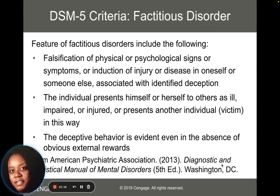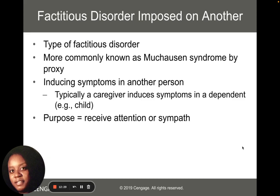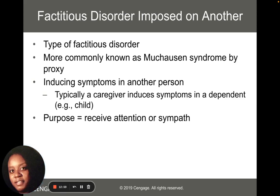Here are the diagnostic criteria according to the DSM for a factitious disorder. There can also be a factitious disorder imposed on another — oftentimes known as Munchausen by proxy. This occurs when a person induces symptoms in another person. It's typically a caregiver who induces symptoms in a dependent person, like a child, and the purpose is to receive attention, sympathy, money, or some type of gain.